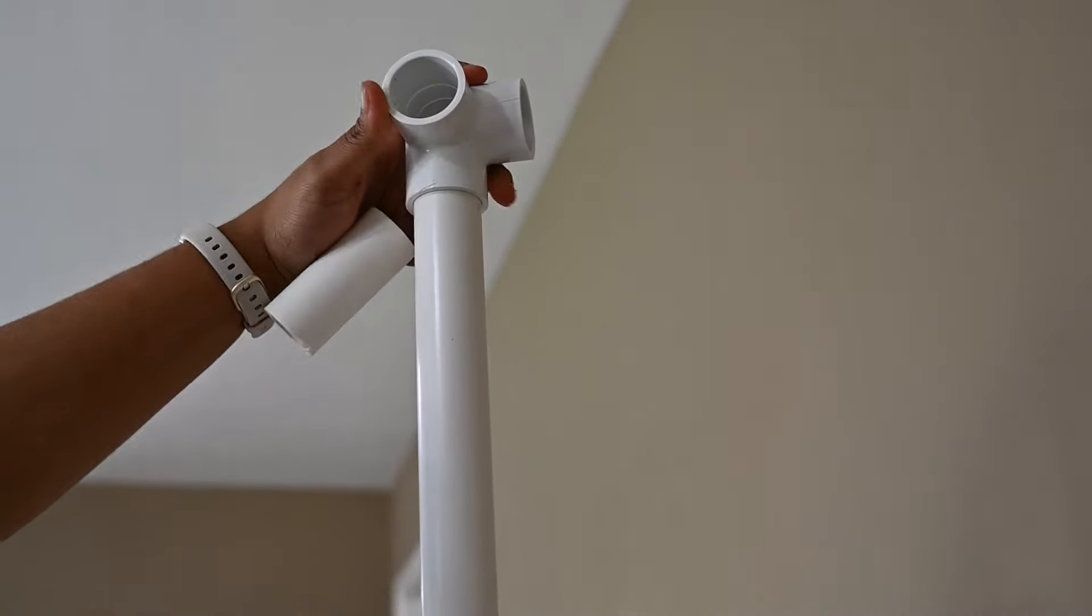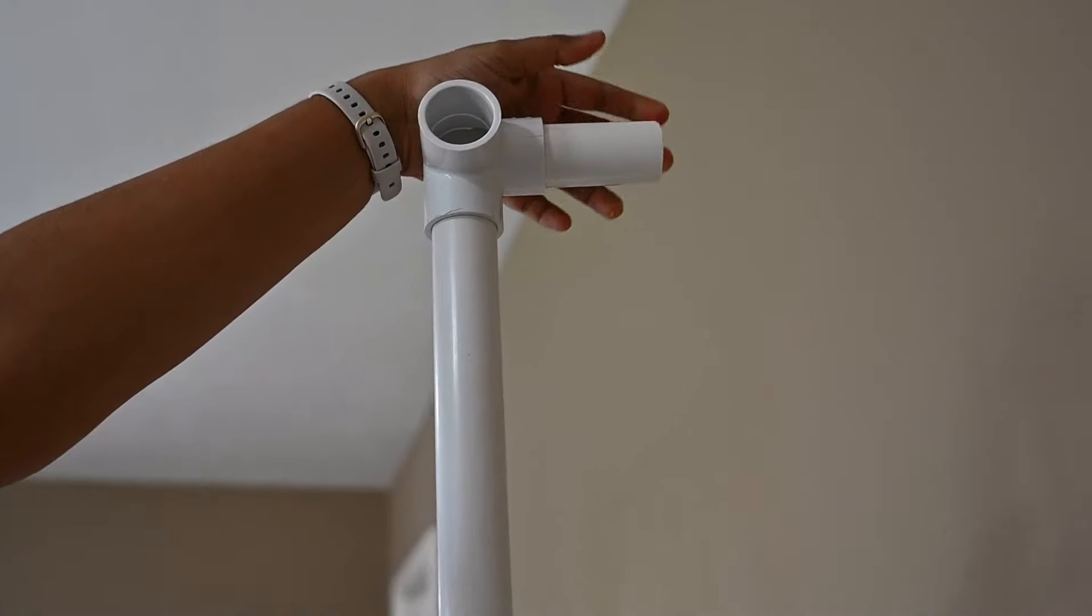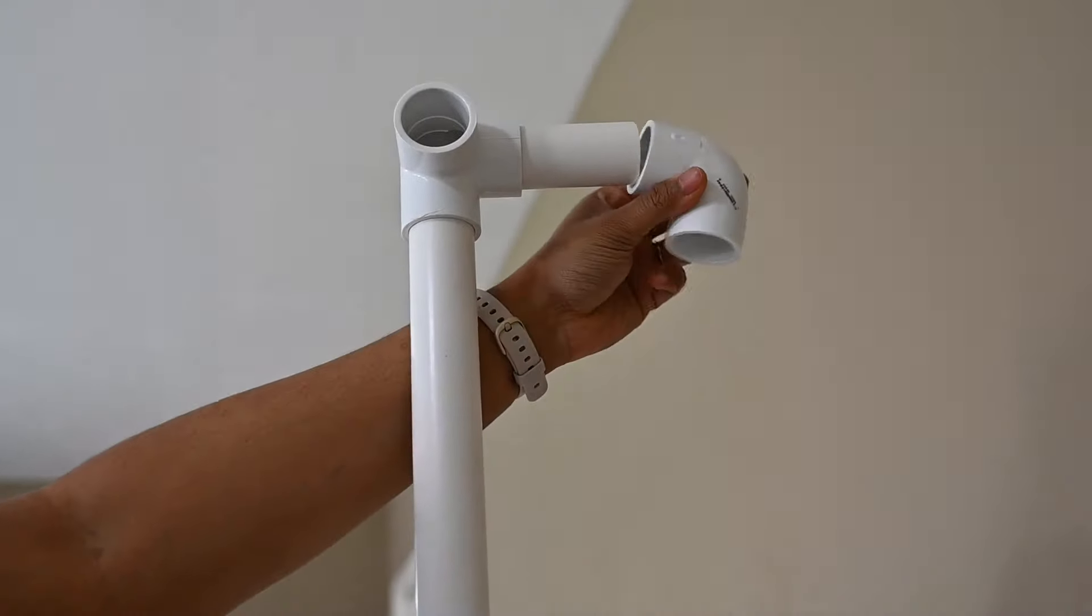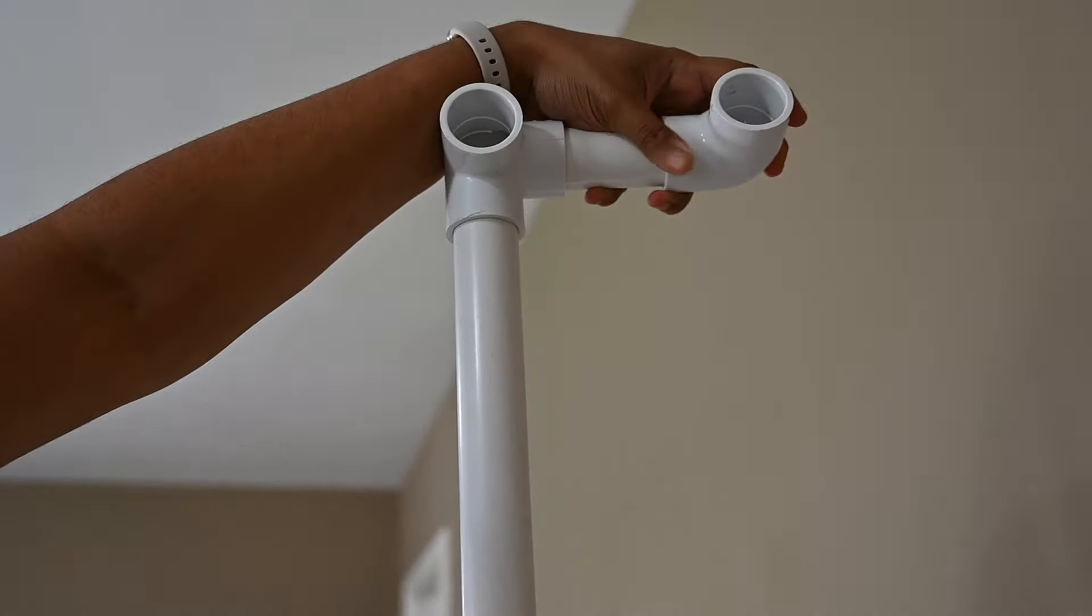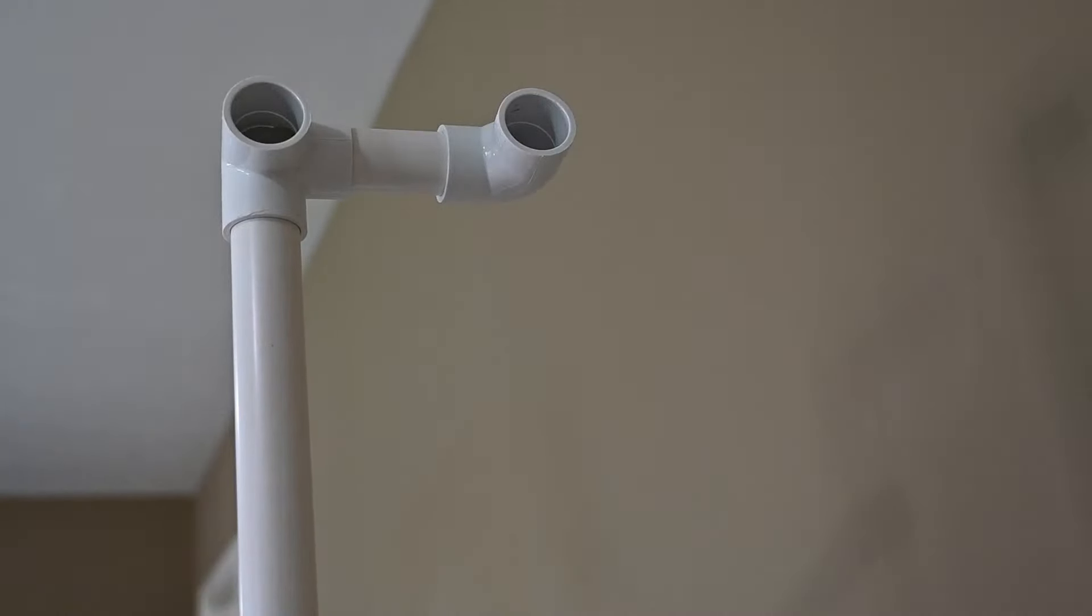Now attach a three-way elbow tee to the top of the pole as shown, and to that add a small PVC pipe and another elbow tee at the end of that PVC pipe to make a double draping stand as shown.